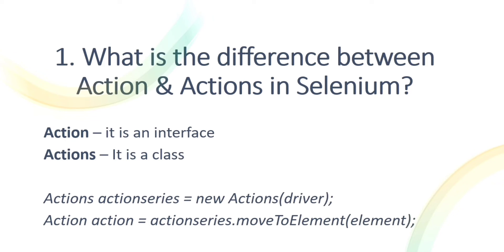In the next line, we are doing a mouse over on an element. To perform mouse over, right-click, context click, or double-click, we use the Actions class. Here we write moveToElement, and the return type of this function is Action, which is the interface.